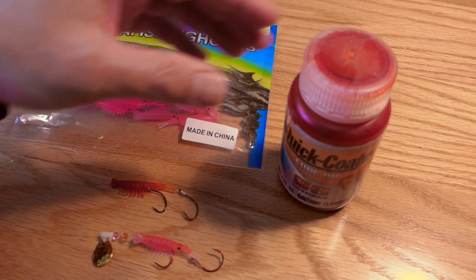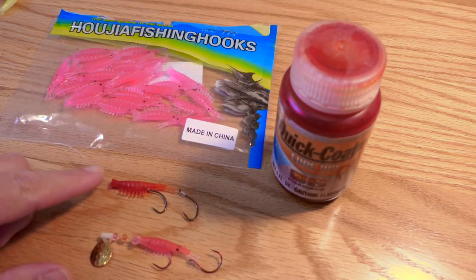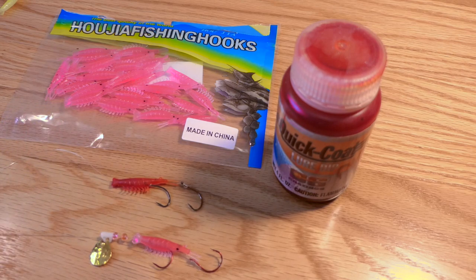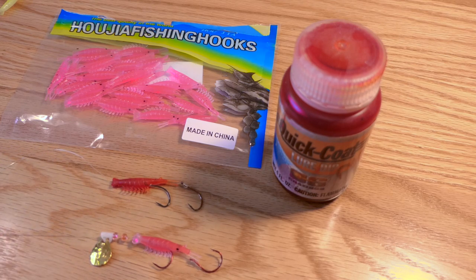And I showed how you can use these lure dips to dip them in there, and you can create red colors, red pink, there's blue, there's a bunch of different dip colors that you can do, and then you can tie up just the shrimp rig, or you can add spinners to it, or whatever you want to do.